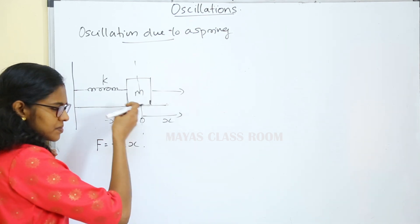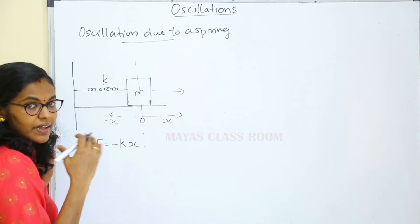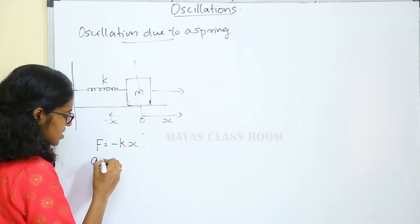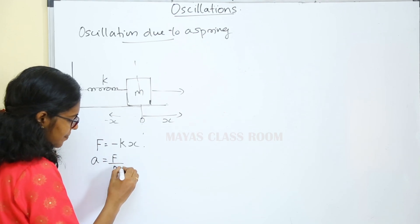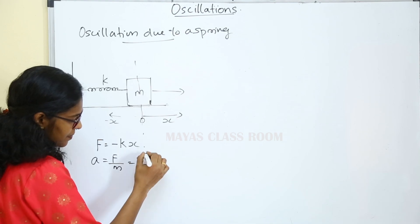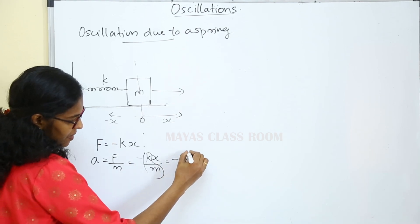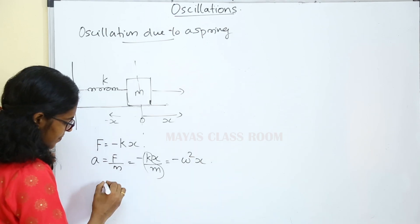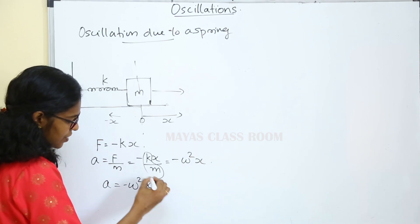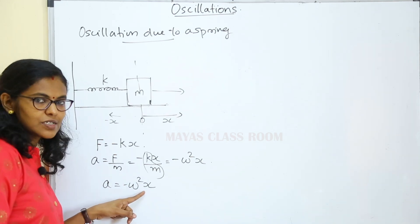If we release the body, acceleration a is equal to F by m, then F is minus k times x divided by m. This k by m equals omega squared, so acceleration a is equal to minus omega squared into x. Acceleration is directly proportional to displacement.